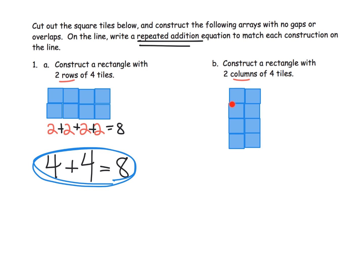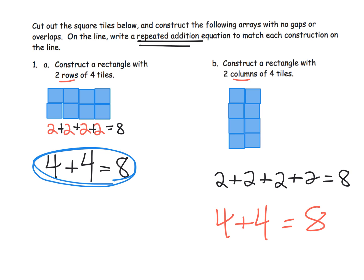Once we've built the rectangle of two columns of four, what repeated addition are we looking for? They're going to look for two plus two plus two plus two, looking at each row which has two tiles. That gives us eight again. Though if students really want to look at the columns and write four plus four, go ahead — there's nothing wrong with that, as long as they're building the rectangle correctly using the words rows or columns.